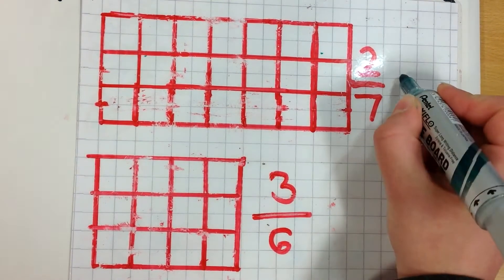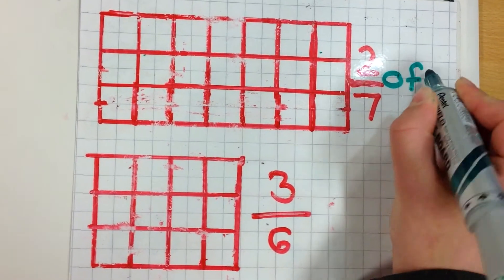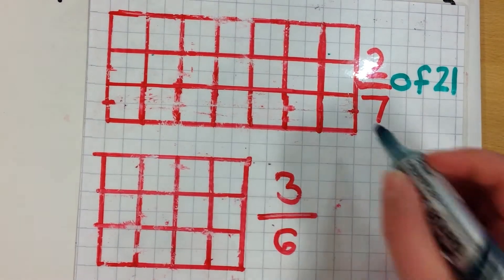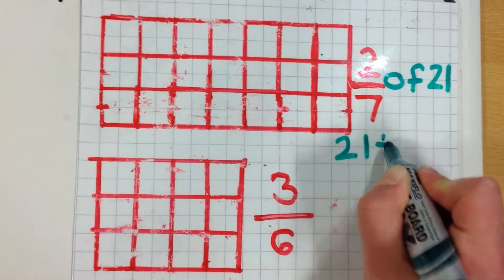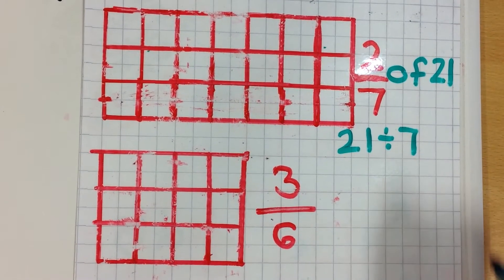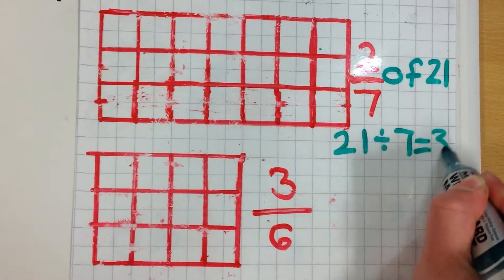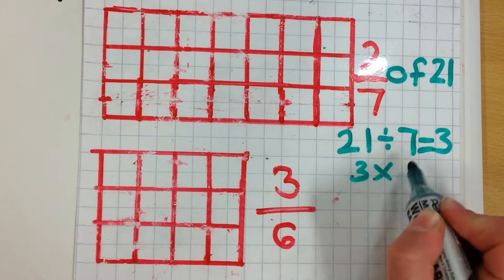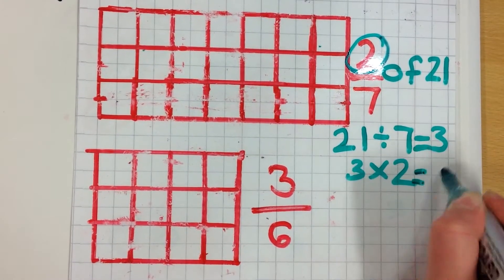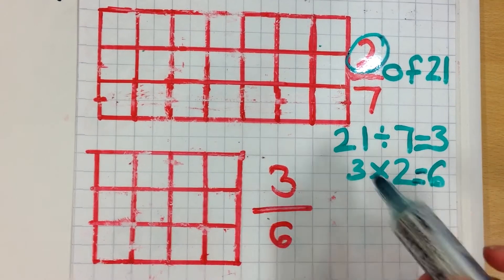So 2 sevenths of 21. So we do 21 divided by 7, because we have to start off with the denominator, which equals 3. And we do 3 times by 2, because it's the numerator. Which gives us 6. So we know that we have to shade in 6.